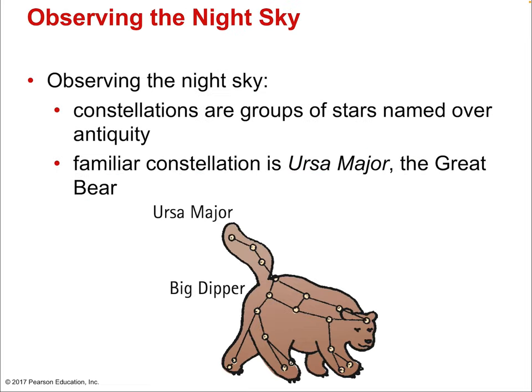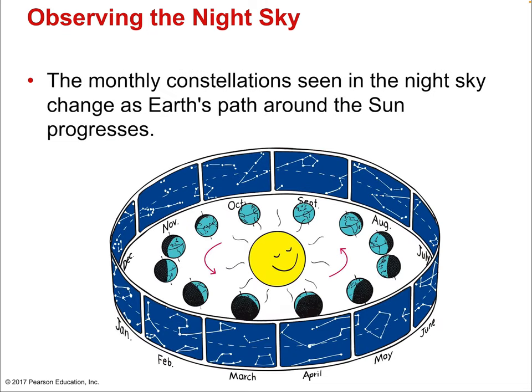Starting with the night sky — imagine going out on a very clear night. You see many constellations, which are groups of stars named over antiquity, thousands of years ago. Familiar constellations include Ursa Major, also known as the Great Bear, and the Big Dipper. Ursa Major is just a connect-the-dots group of stars.